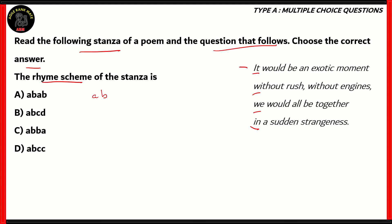Let's look at how many different sounds are present in this stanza. The first line is 'it would be an exotic moment' — the first word starts with the 'i' sound, so we consider that as A. Next, 'without rush, without engines' — the 'w' sound is present, so we use B. The next line reads 'we would all be together' — again the 'w' sound, so that's also B. Finally, 'it's in a sudden strangeness' — again the 'i' sound, so that goes back to letter A. So the rhyme scheme reads i, w, w, i — which using letter representation gives us A, B, B, A.